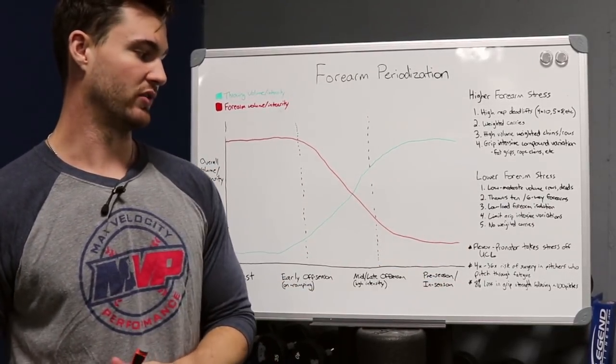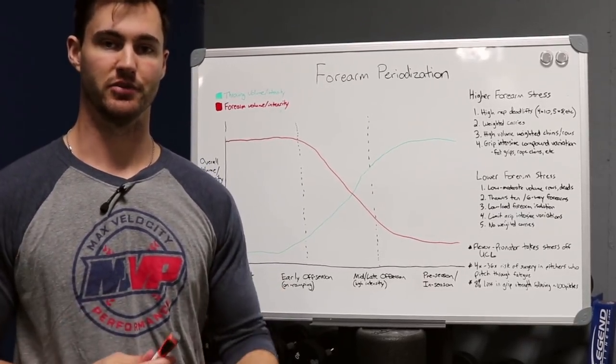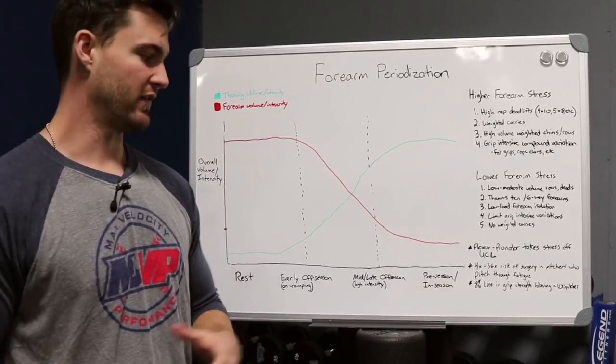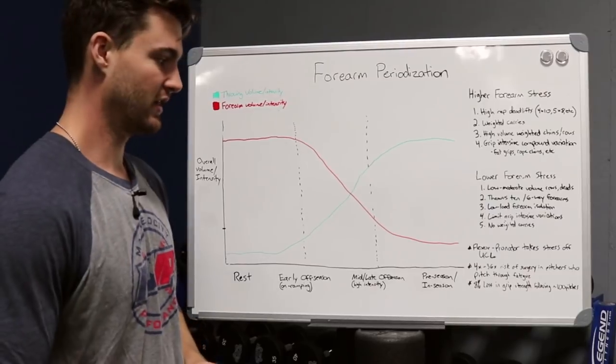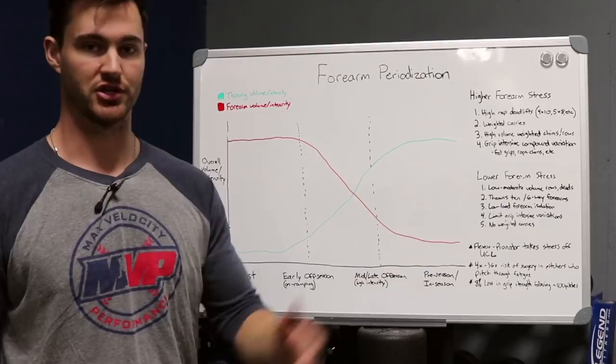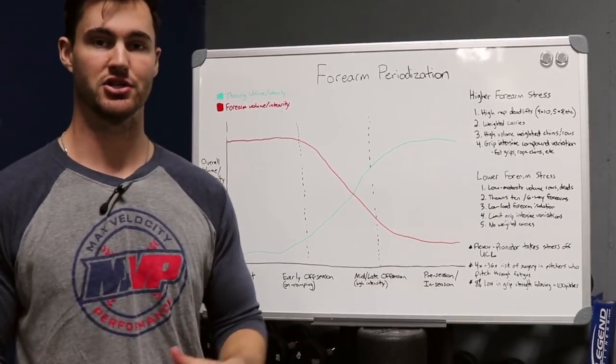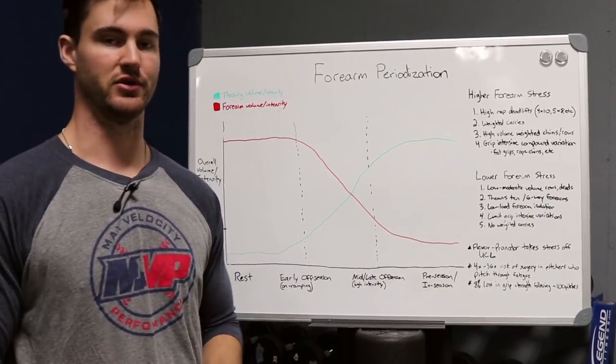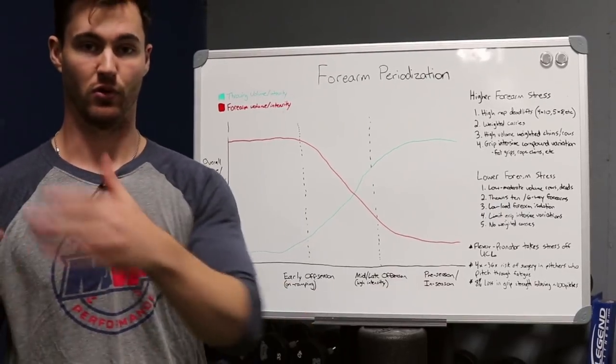Another point, another study showed that following an outing of roughly seven innings or 100 pitches, there was on average an 8% loss in grip strength. So if any of you think that pitching isn't fatiguing your forearms, that's blatantly not true. There's also a loss in internal rotation, horizontal adduction, and shoulder flexion. So a lot of these short-term adaptations that happen from being fatigued from throwing, you want to make sure you're not just going and crushing those same exact muscle groups in the weight room the day before or day after.